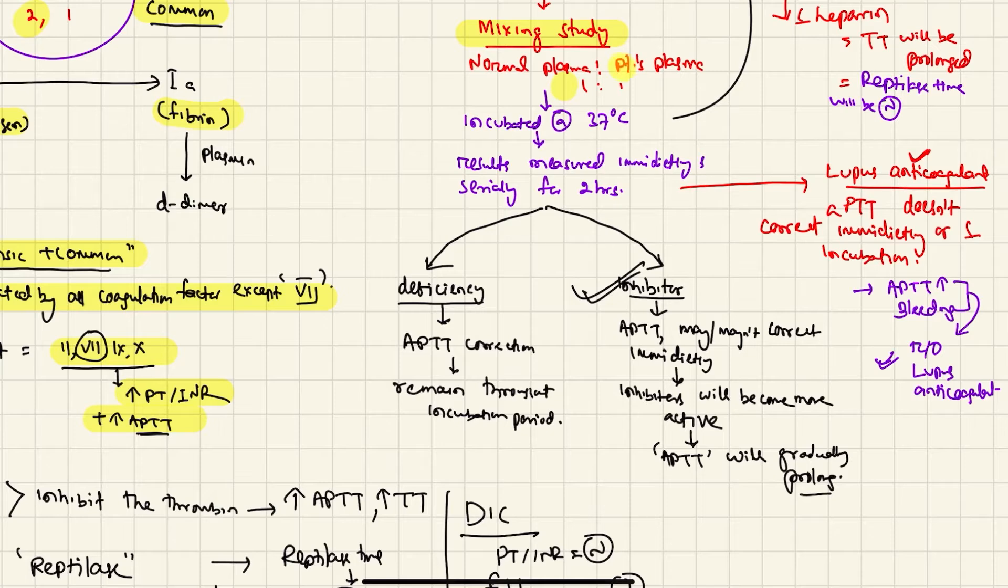In the mixing study, we will mix normal plasma and patient's plasma in one-to-one ratio and incubate it at 37 degrees Celsius. Results are measured immediately and serially after two hours.